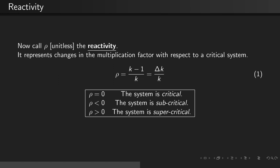When rho equals 0, the system is exactly critical. When rho is less than 0, the system is subcritical. And when rho is greater than 0, it is supercritical.